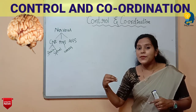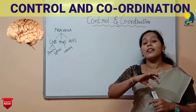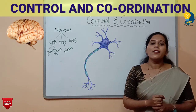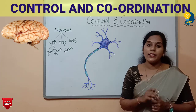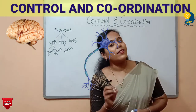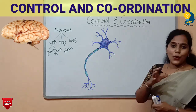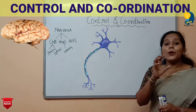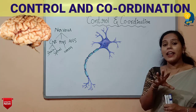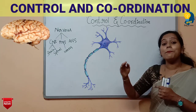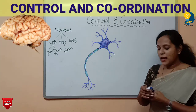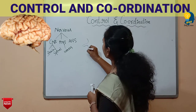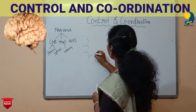Our entire nervous system consists of nerves — that is, neurons. There are millions of neurons present in our nervous system. Now let us understand how neurons receive messages from the external environment and send them to different parts of the body. I will draw a rough diagram of the neuron.